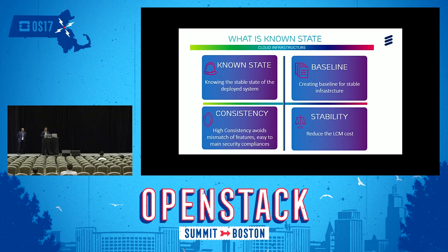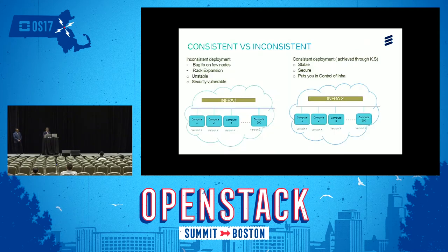With a high degree of consistency, we have high stability in the network that reduces the overall lifecycle management cost of the deployed system. Here we will see some differences between consistent versus inconsistent deployment. In this slide, we have two infrastructures: infra 1 and infra 2. In infra 1, we have 200 computes deployed, and in infra 2 we also have 200 computes deployed.